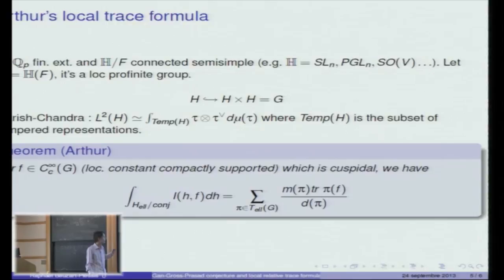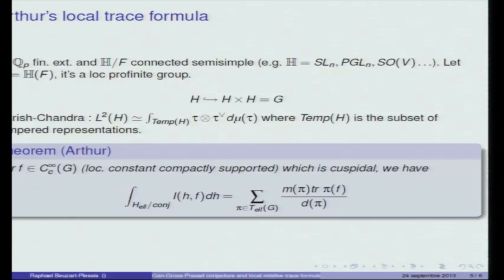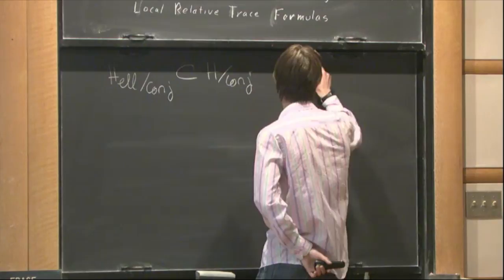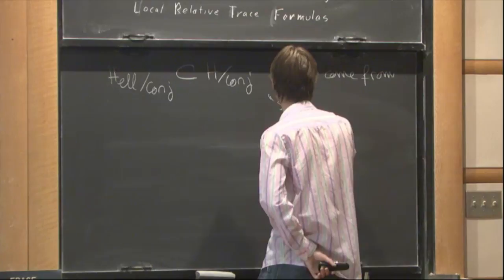I take F to be a continuous function of G. I assume it to be compactly supported and smooth in the sense of profinite group, which means that it's locally constant and which is cuspidal. I will explain what it means. Then we have the following equality. I will explain all the terms here, but the important thing is that on the left you have orbital integrals as before and on the right you have trace of representations. Here, H elliptic conjugation is a subspace of the conjugation classes in H that are the conjugation classes in some sense that don't come from smaller groups.